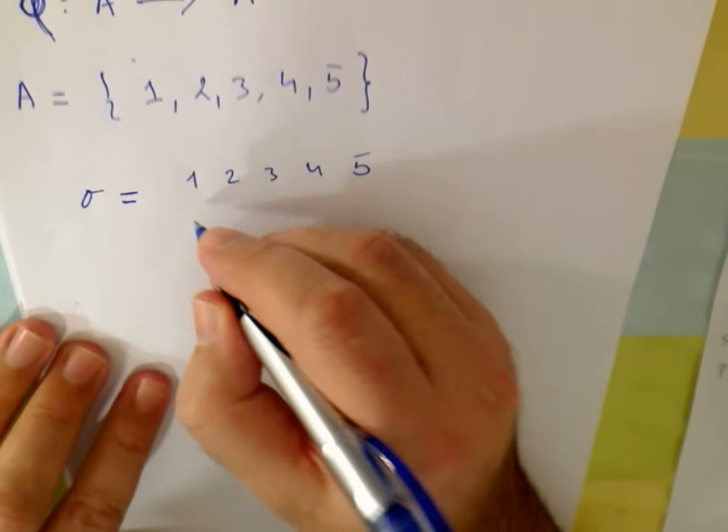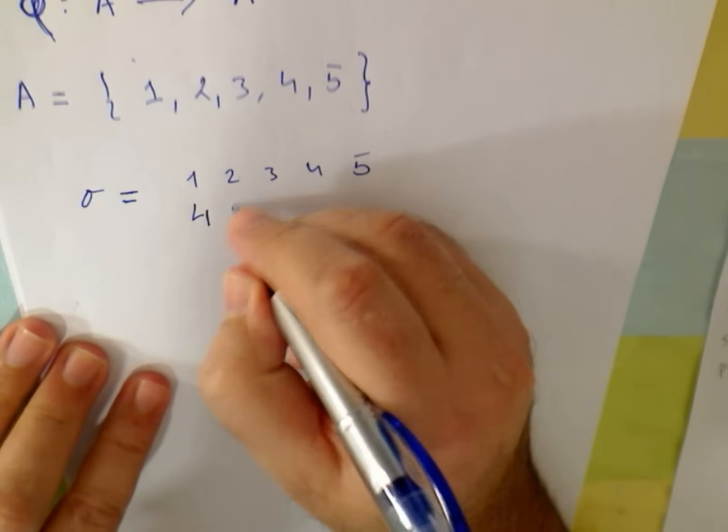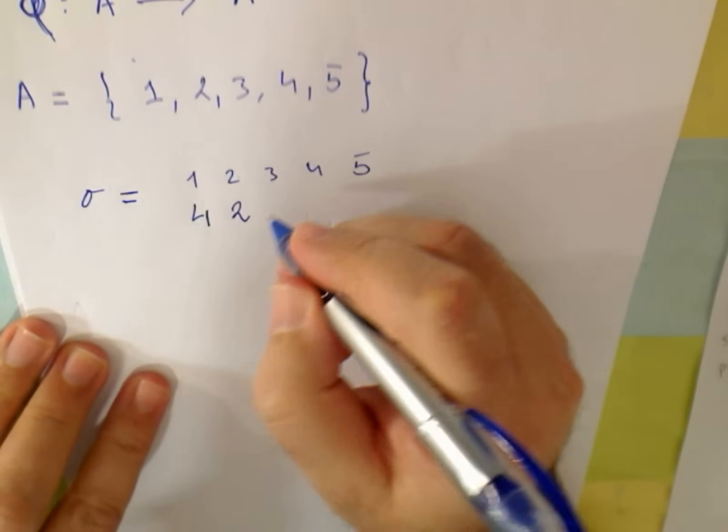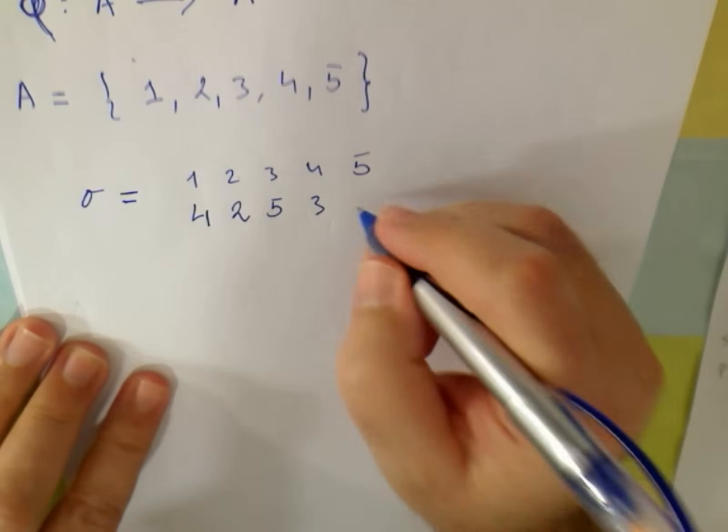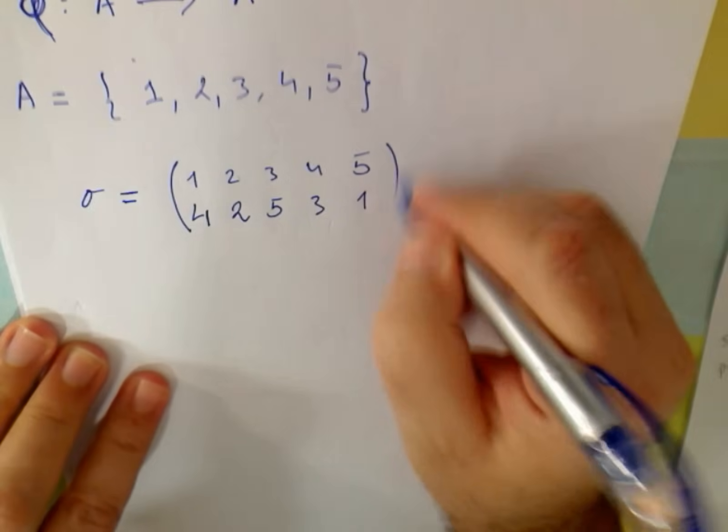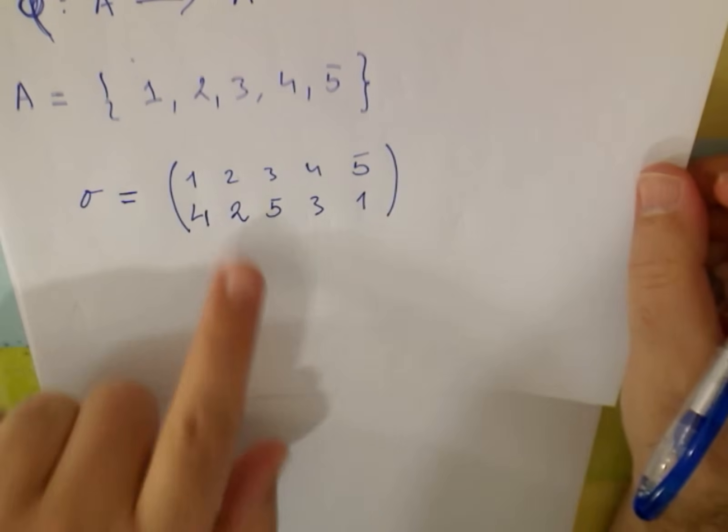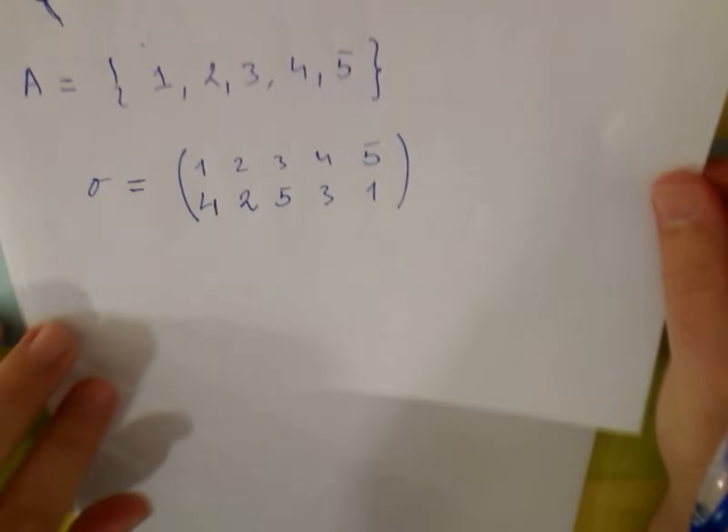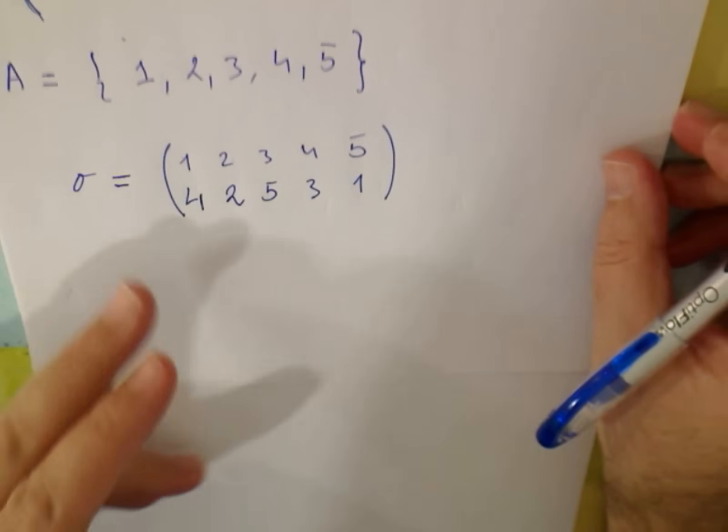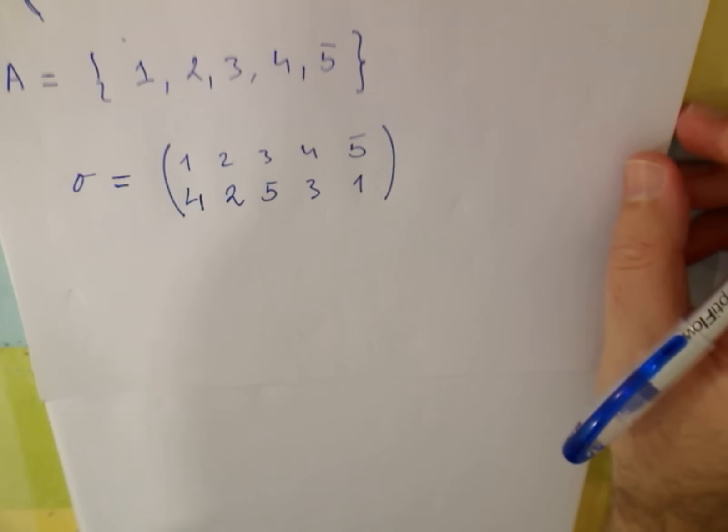So the standard notation is 1 to 4, 2 to 2, 3 to 5, 4 to 3, and 5 to 1. So this is the standard notation for this. This is exactly the same. Get used because this is the language of group theory.